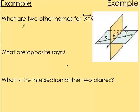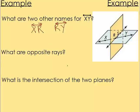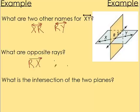What are two other names for line XY? XY has R also going through it, so instead of line XY we can call this line XR with arrows on top, or we can call this line RY. You can also do YR or line YX — everything works. What are opposite rays? R is the middle point, so RX will be a ray going one way and RY the other — those are opposite rays. The intersection of the two planes is going to be a line — just like we said — the line is along R and S, so it will be line RS with arrowheads.